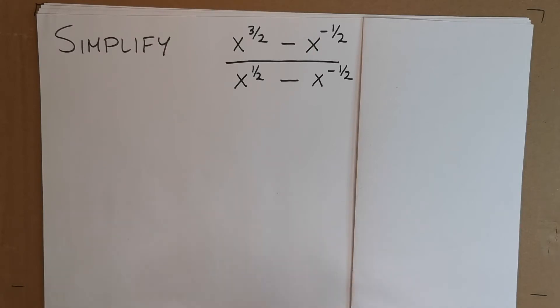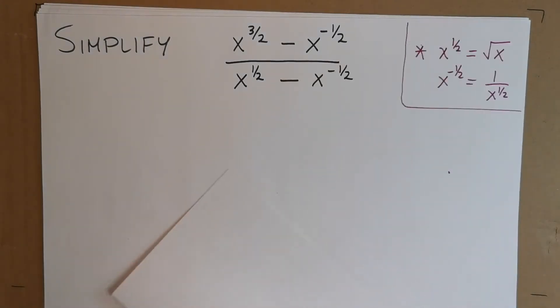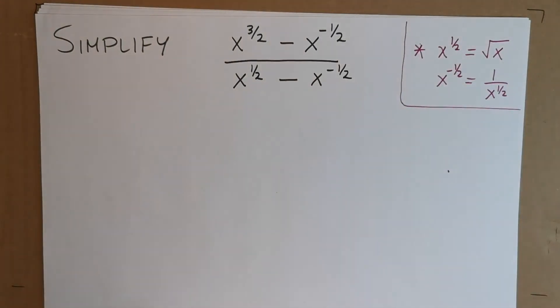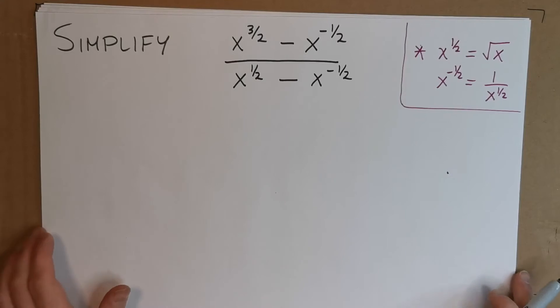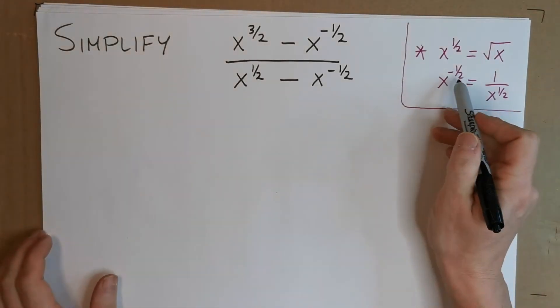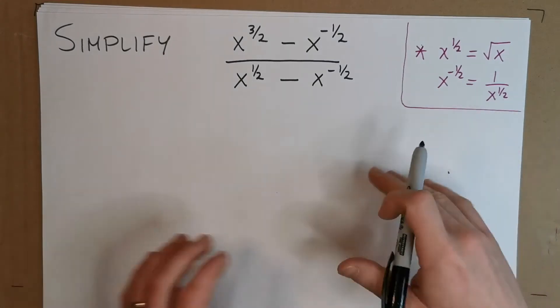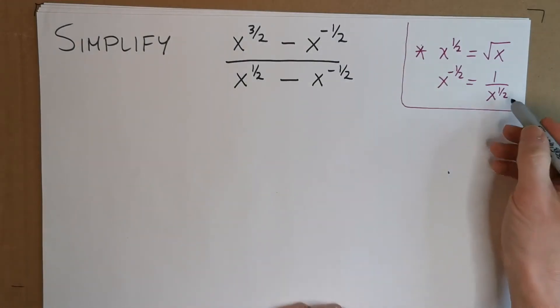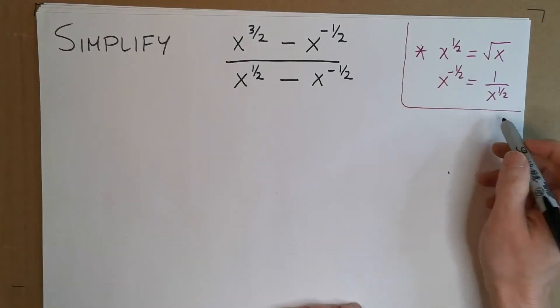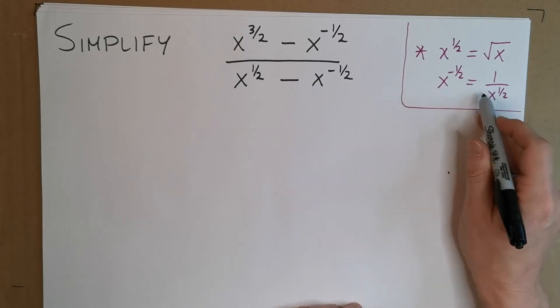The first thing I see here is this x to the half. x to the half is actually the square root of x, so you should know that at this stage. x to the minus the half is the same as 1 over x to the positive half, because of the rules of indices. We bring it down, we can change the sign, equally we could bring this up and it changes the sign, so these two things are equivalent statements.